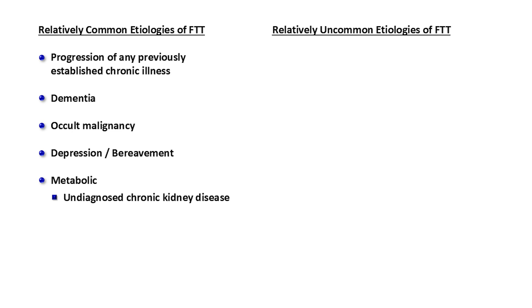Relatively common etiologies include progression of any previously established chronic illness, the severity of which has just been underappreciated. It also includes dementia, occult malignancy, depression and/or bereavement — meaning a profound sense of loss following the death of a loved one. Relatively common metabolic causes include undiagnosed chronic kidney disease progressed to the point of causing uremia or electrolyte abnormalities, hypothyroidism, and iron deficiency.